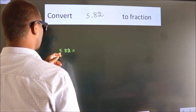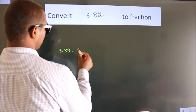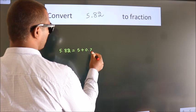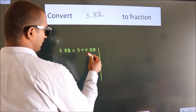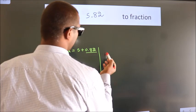First we should break this into 5 plus 0.82. Next, convert this to fraction over here.